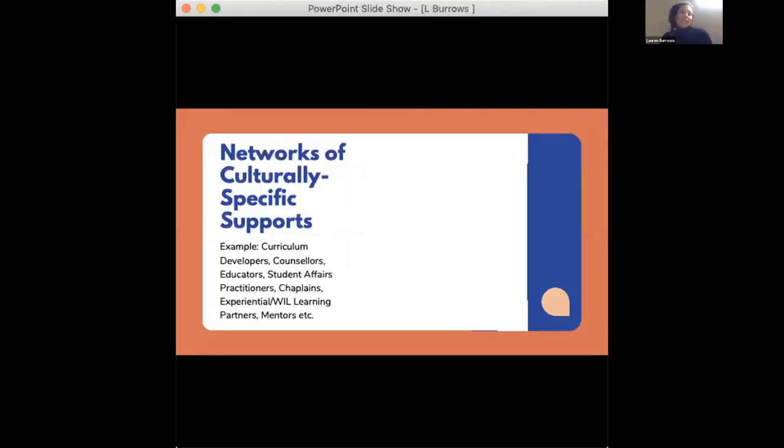The second one is creating networks of culturally specific supports. I say culturally specific and not responsive or competent or aware because ideally we would want to privilege supports that are from those communities. These include curriculum developers, counselors, educators, student affairs practitioners, chaplains, experiential learning partners and mentors.